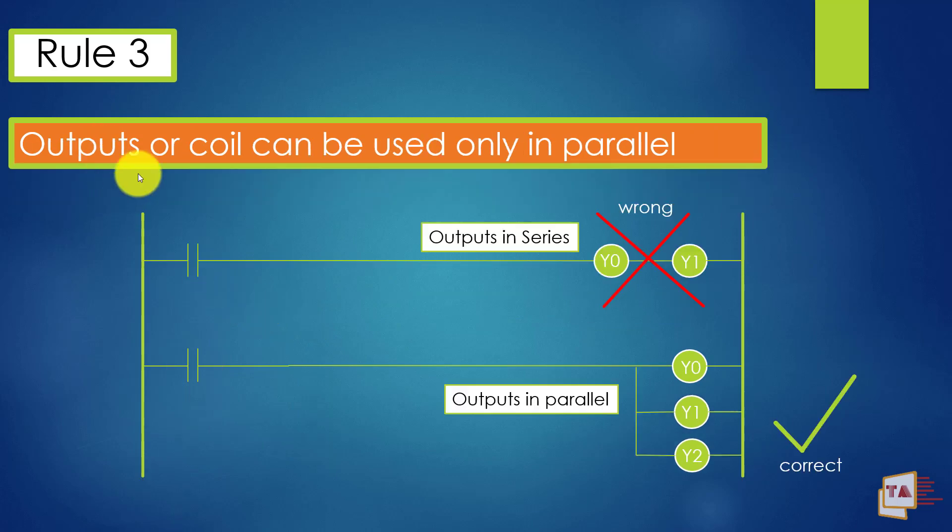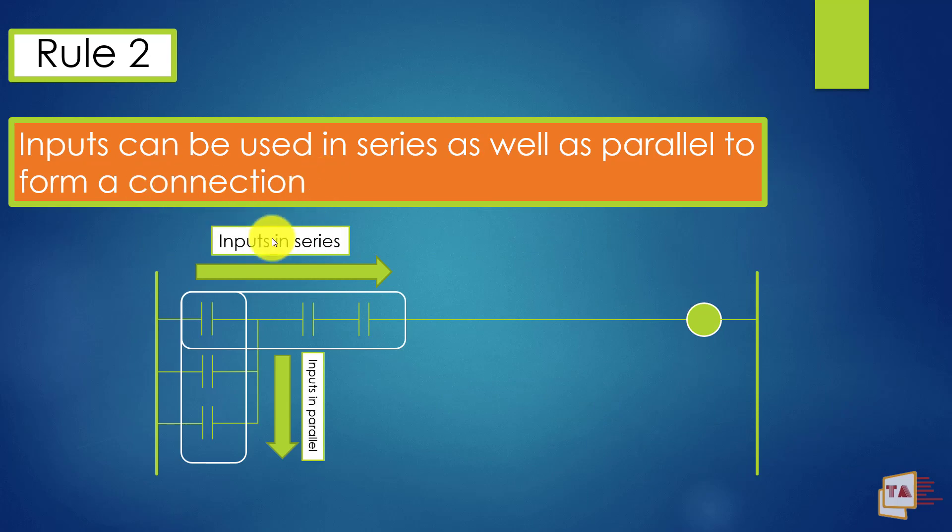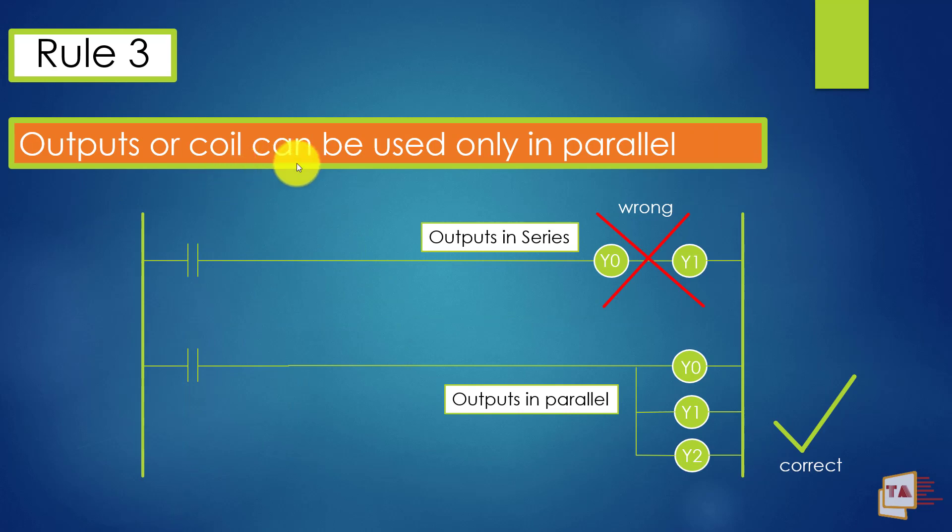Next rule number three: outputs or coil can be used only in parallel. Inputs, we can use in series and parallel also, but here outputs or coil can be used only in parallel. You cannot use it in series. See here, I have mentioned the output in series. So this is the wrong method. If you put the output coils like this, software won't accept the line. Maybe it will throw some error. So if you place the outputs in parallel, this will be okay. This is the correct method to place the outputs.